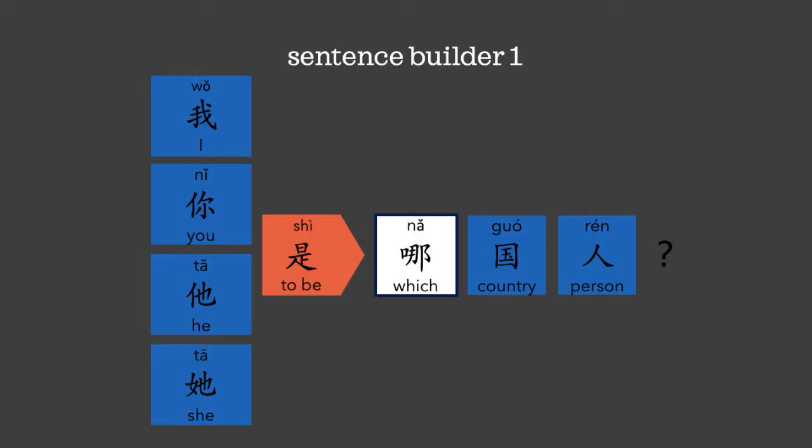The colour-coding strategy helps learners process new information as they are learning. Here's an example of the colour-coded sentence builders. Students without any prior knowledge of Chinese will be able to make sentences in Chinese and compare it to English and Welsh grammatical features. Let's watch a short video of some students speaking Mandarin confidently through using the colour-coded sentence builder.